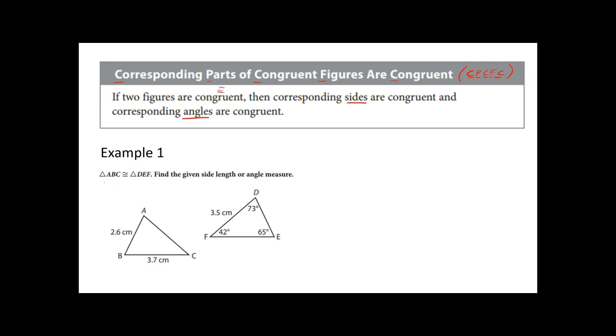So if you look at example one, triangle ABC is congruent to triangle DEF. Now, find the given side lengths and angle measures. Well, if we look here at side AB, it's the smaller side segment or side length of that triangle. Well, since we're told that these two triangles are congruent, that means DE is also going to be 2.6 centimeters in length.